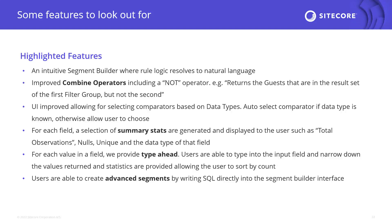Inside Sitecore CDP segmentation there are many features and UX design capabilities to control your segments. For example, you have combined operators such as OR and AND so you can combine different conditions to build your segments. You can view summary reports and statistics showing details about your segments — how many users and visitors are inside them, how much they increased or decreased in recent periods, and other details such as unique records. There is also a type-ahead feature that autocompletes what you're looking for while building segments using the data in your record sets. Finally, an advanced segments feature allows developers to write SQL code directly to build custom segments using the segment builder interface.